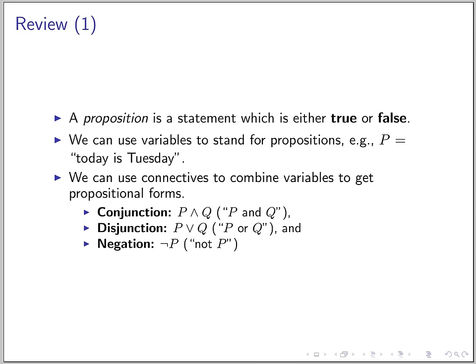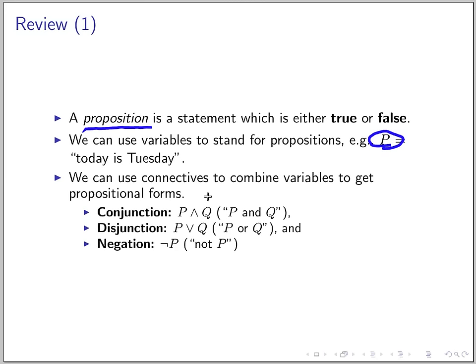Let's have a quick review. We talked about propositions. A proposition is a statement which is either true or false. To save space and to make it clear, we often use variables to represent propositions — for example, we would have p here. We can use connectives to combine variables to get propositional forms. For example, you have a conjunction here, which is p and q. And you can have disjunction here, p or q. And you can have negation, which we would pronounce like not p.